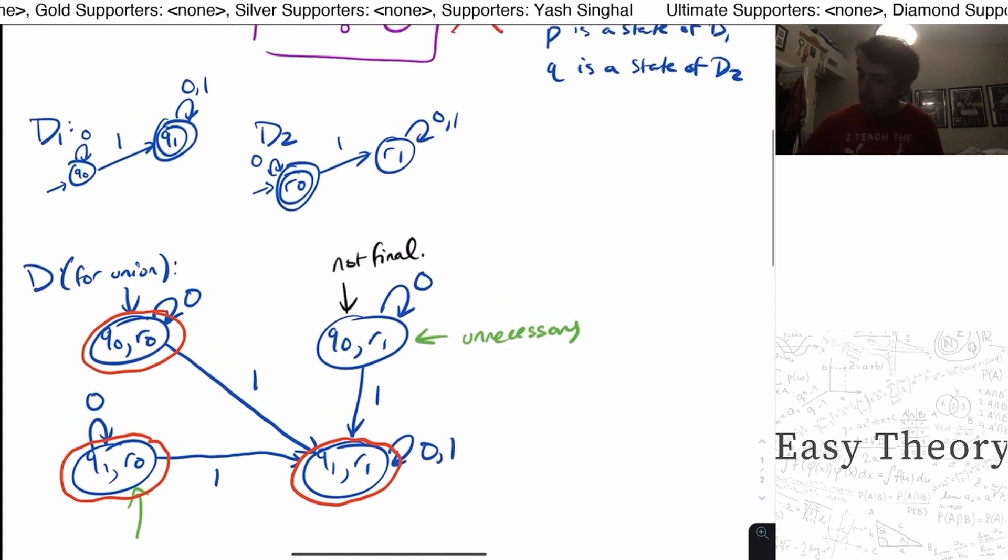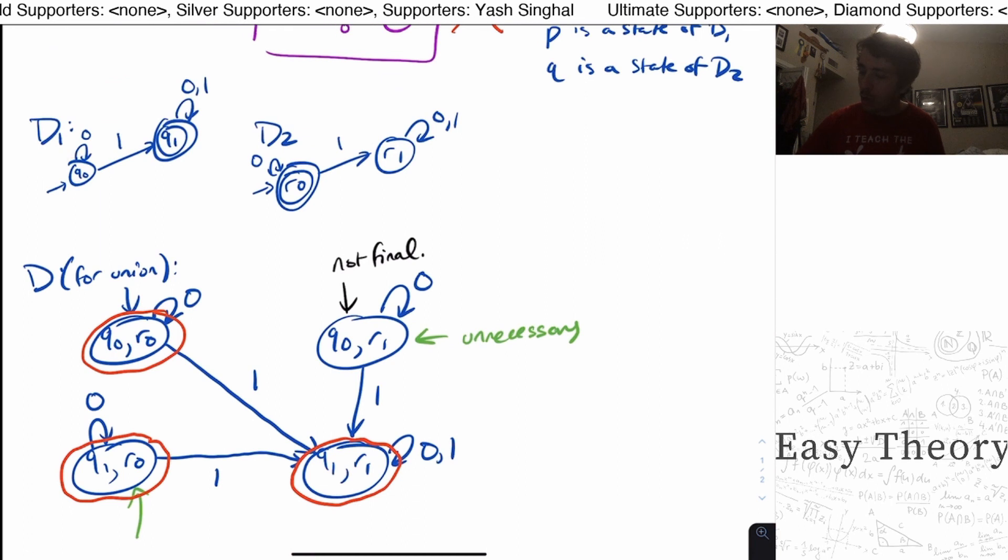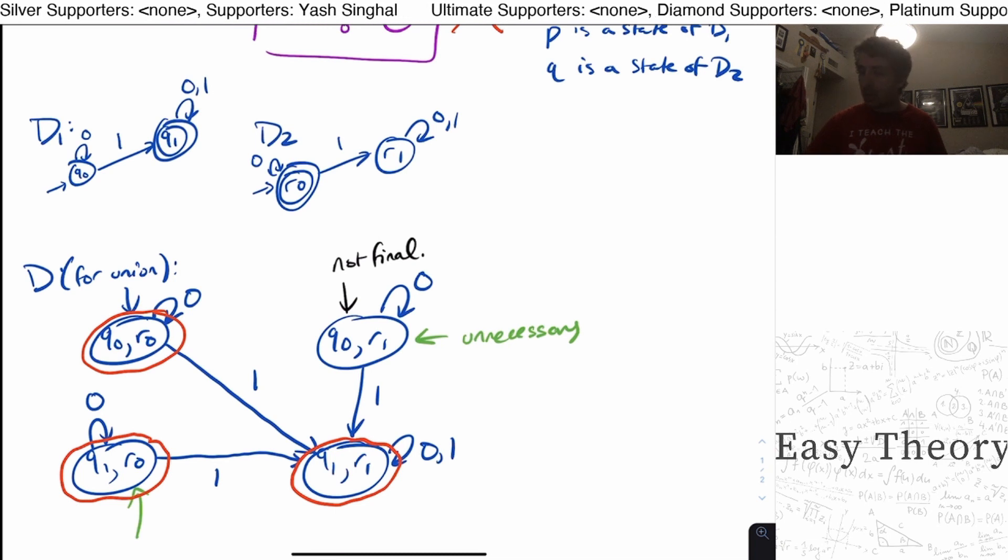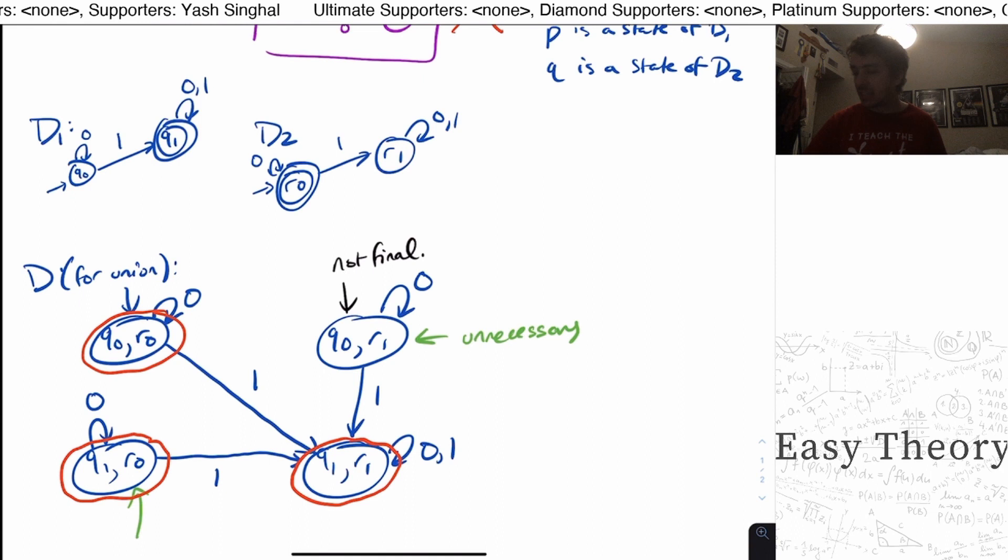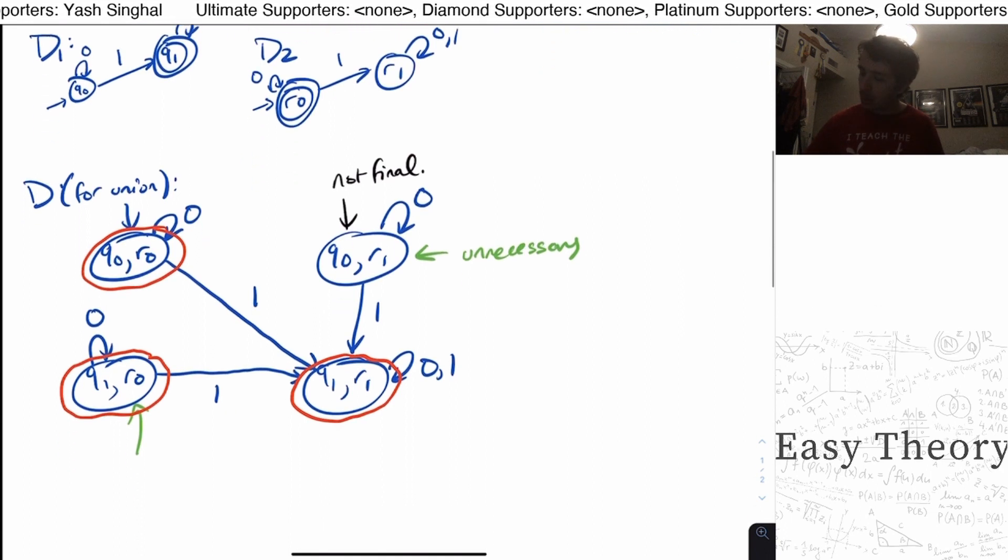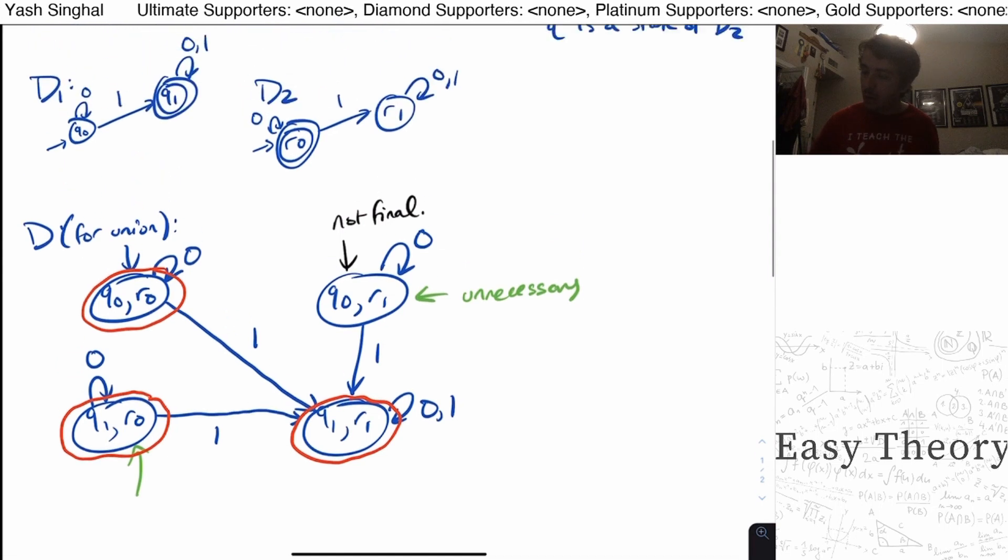And how can we verify that this is the case? Well, if we look at the pair Q0R1, neither of the states was final. So when we're doing the product construction, it can't possibly be the case that this state is going to be final because neither of the originals was final.